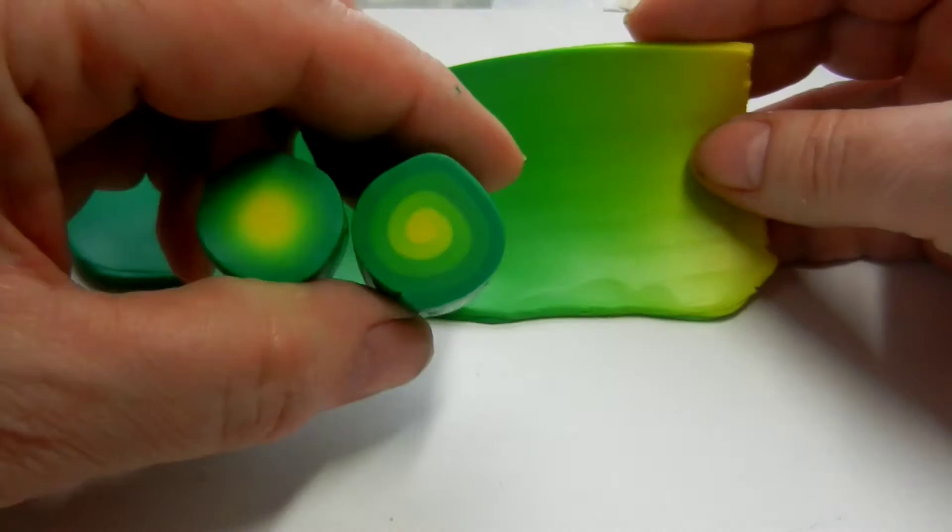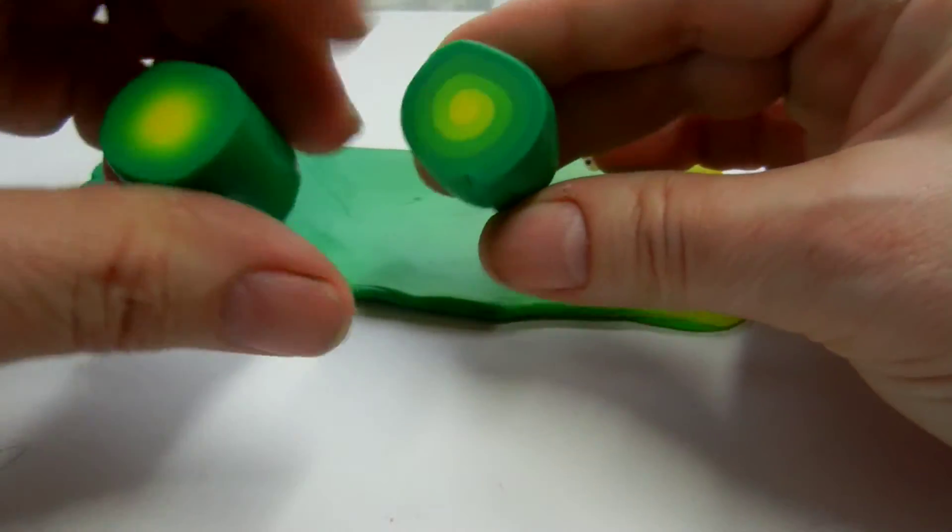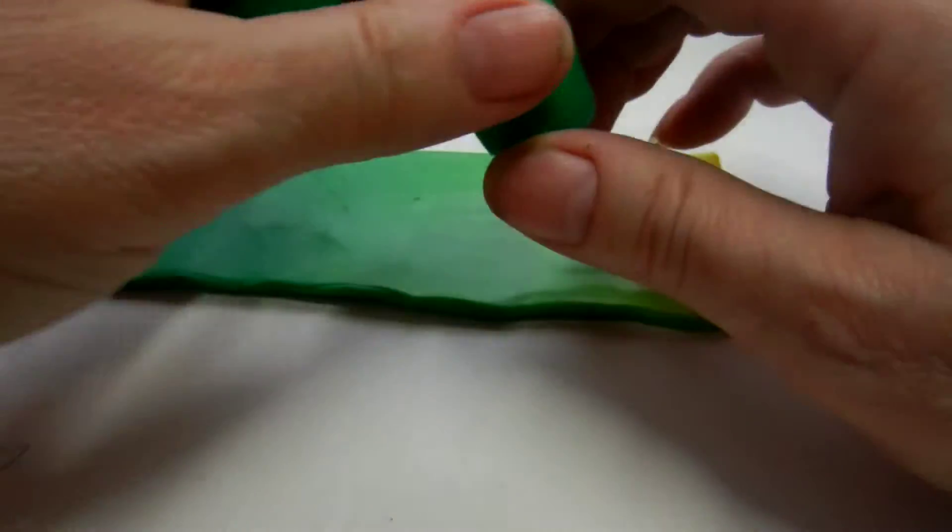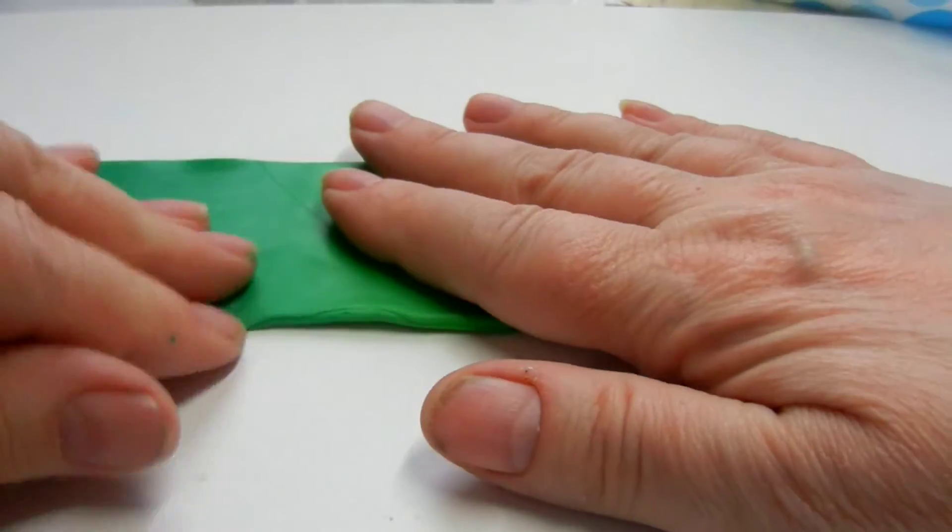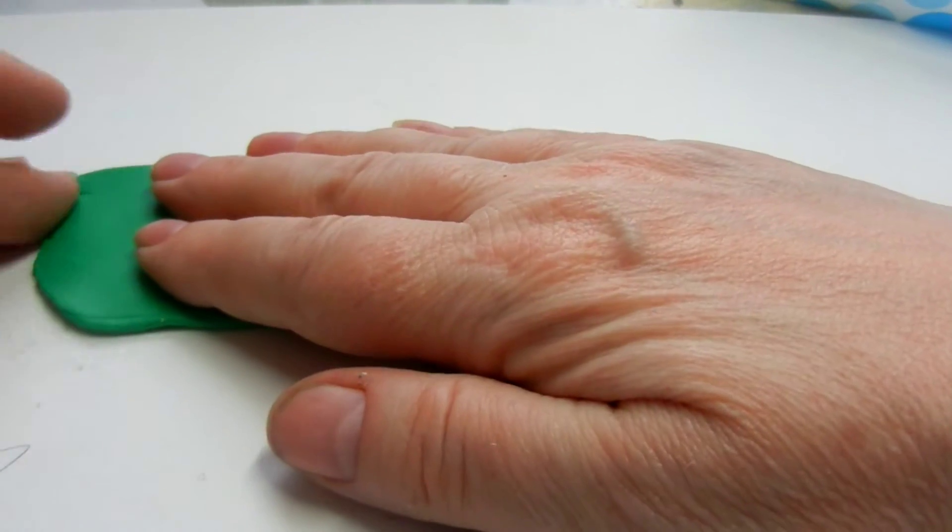So how do you do that? How do you go from the swirly to the really nice blend? This is going to shock you maybe, or it's going to just seem like, oh my goodness, I should have thought of that.